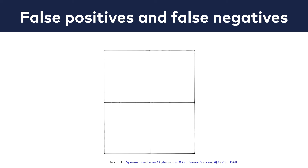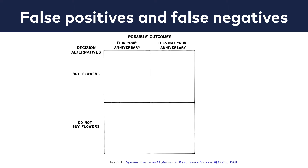One of the best explanations I've heard about false positives and false negatives was in Dr. David Weissmann's presentation, who took it from a science paper from 1968. It's an everyday life situation: let's say you are a husband, you go home, but you can't remember whether today is your anniversary or not. You try to predict and decide whether you should bring flowers or not.